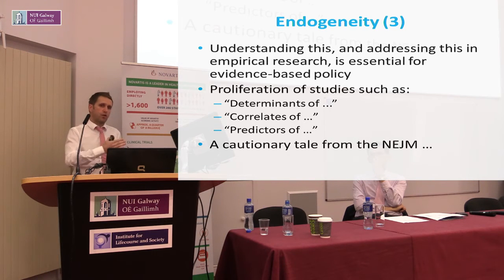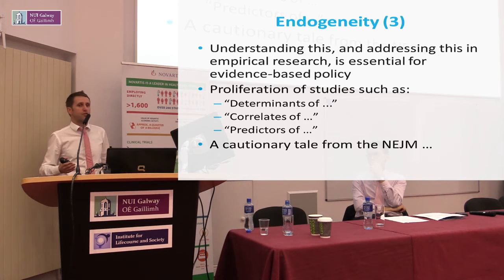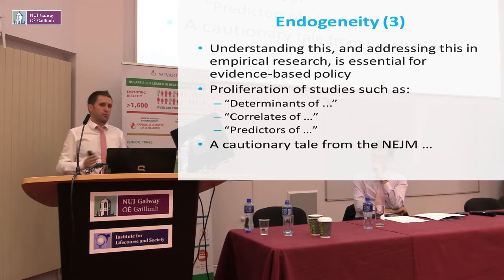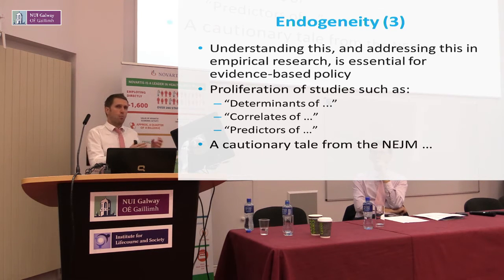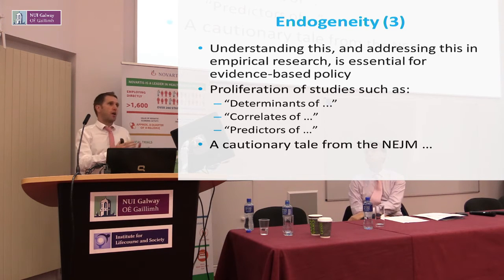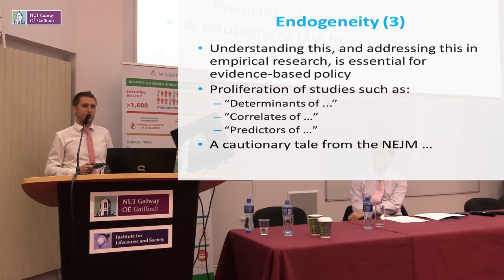Looking at the broader context — there have been huge increases in journal article publications over the last 15–20 years, and associated with that has been a proliferation of studies looking at determinants, correlates, and predictors of some issue. I don't mean to dismiss these studies — I do some of them myself — but we need to be very careful about how we take results from these studies and apply policy recommendations from them. We have to be very careful about what the results actually mean in terms of what policy makers should do.